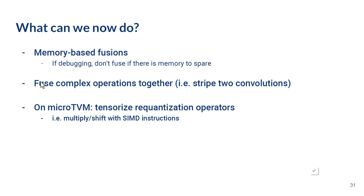Relax also lets us fuse more complicated operators together — something not previously possible in Relay. We can now fuse things like multiple convolutions together. And on MicroTVM, one opportunity we're interested in is the ability to tensorize re-quantization operators and fuse those two for loops together.